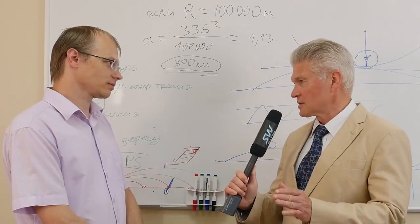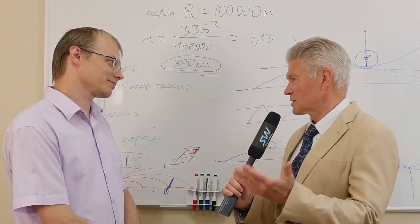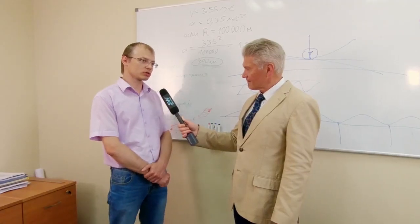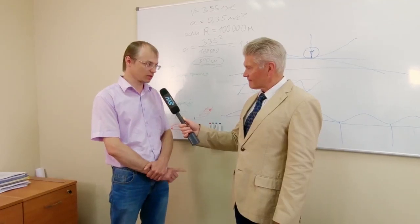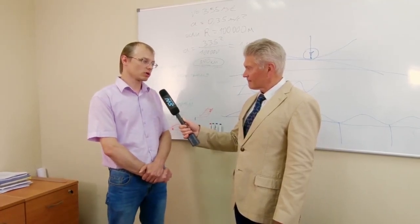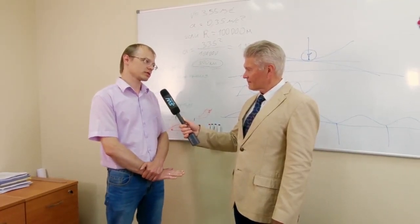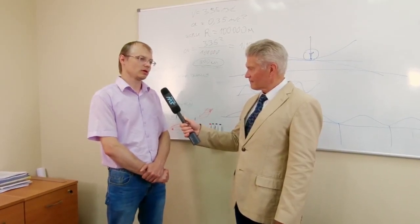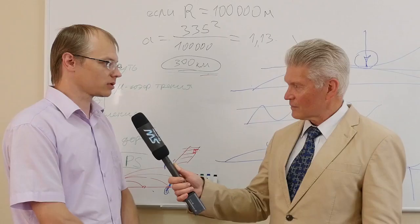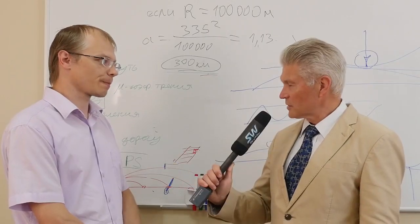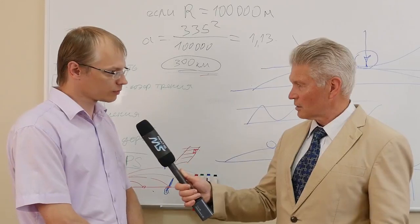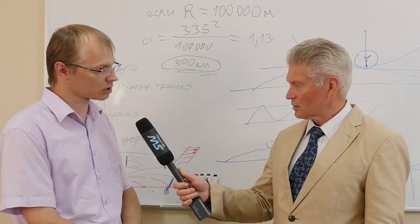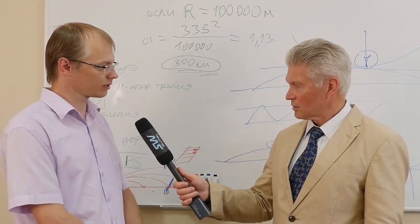Спасибо. Насчет пассажировместимости вы уже намекнули, но может все-таки назовете какие-то цифры, также энергопотребление и так далее. Это ориентировочно при скорости 450 км в час, средней скорости, около 8 литров, скажем так. Не будем пока более точной информации указывать. Но здесь надо понимать... 8 литров это на модуль? 8 литров это на 100 км, как идет расчет расхода и у автомобильного транспорта.